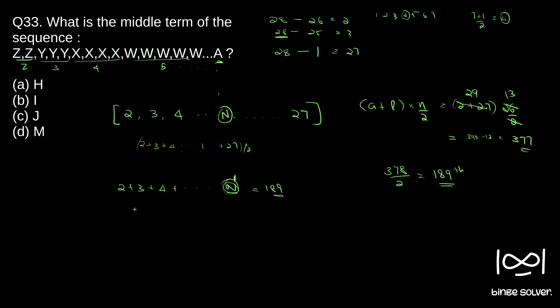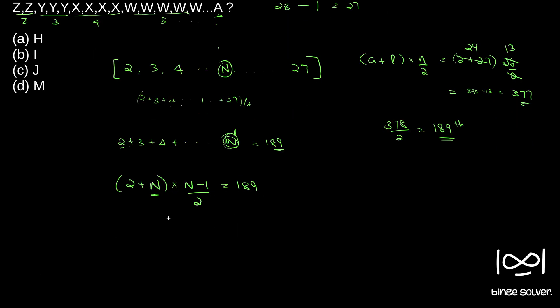So again we can use the sum formula, a plus l into n by 2. So that means 2 plus here last number is our n into total number will be n minus 1. Since it is starting with 2, total number of digits will be n minus 1 by 2. So we have to find some n such that 2 plus n into n minus 1 by 2 gives 199.